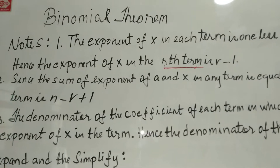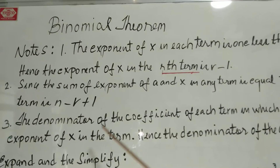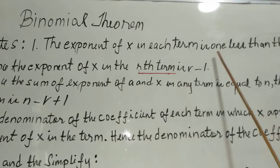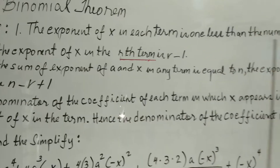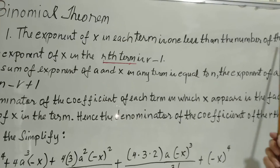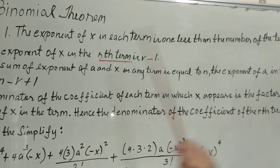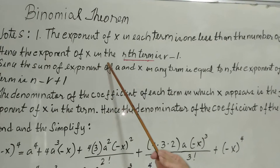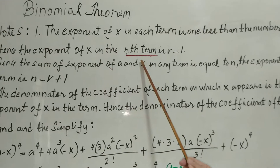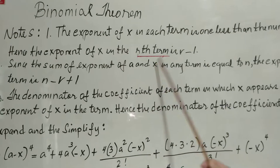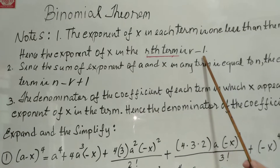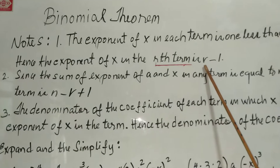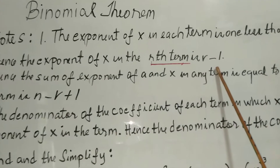The first note: the exponent of x in each term is one less than the number of the term. Hence, the exponent of x in the r-th term is r minus 1. So, this is the number of the term minus one that will be the exponent of x.